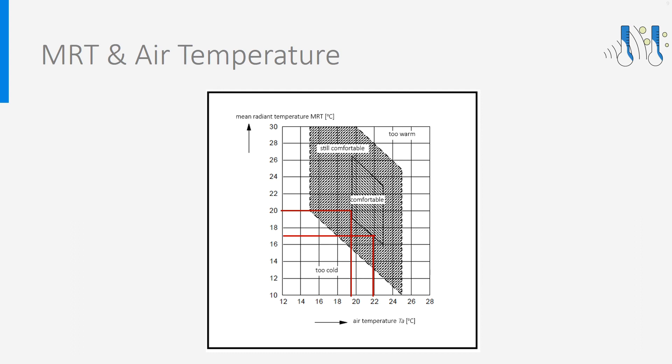Surface temperatures of walls and windows depend strongly on insulation. In a well-insulated building, the surface temperatures during the cold season are higher than in a poorly insulated building. This results in less transmission losses and therefore less heating energy. Furthermore, because the MRT is high, the air temperature can be lowered, decreasing even more the transmission losses and the heating energy.